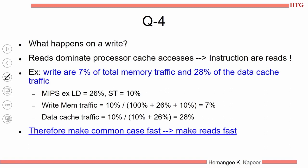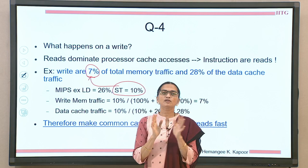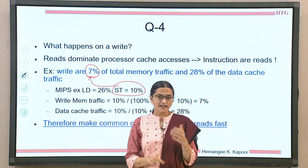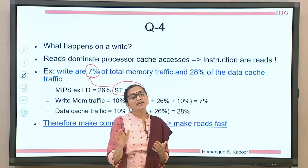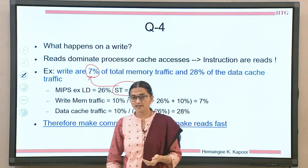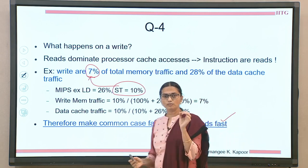What do we conclude from this example? The writes are less to a data cache, and if we translate them to the total memory traffic, they only translate to 7 percent of the total memory traffic. In general, the writes which go all the way to the main memory are very few. Hence reads are frequent. We learn from Amdahl's law that we have to make the common case fast — so make the reads fast.